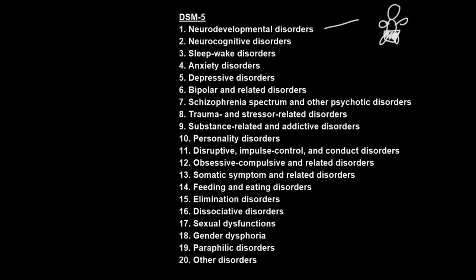Every one of these big categories has an 'other' category at the end of it. The next big category is called the neurocognitive disorders, which involve distress or disability from the loss of cognitive and often other functions of the brain after the nervous system has developed. The distinction here is that with neurocognitive disorder, the nervous system developed and then lost functions, as opposed to neurodevelopmental disorders where the function was never gained in the first place because the abnormality happens during development.